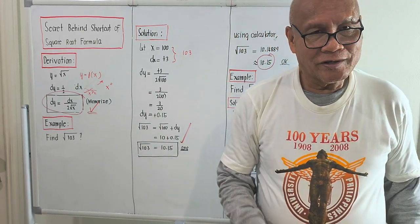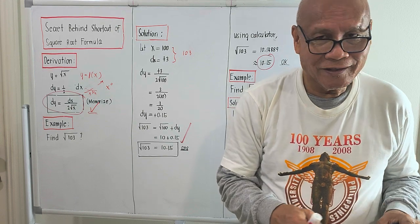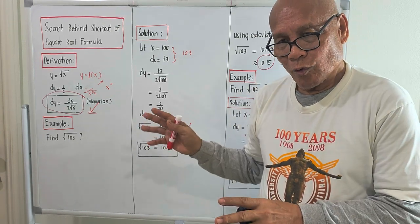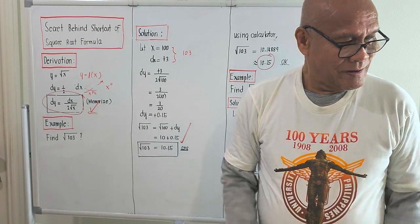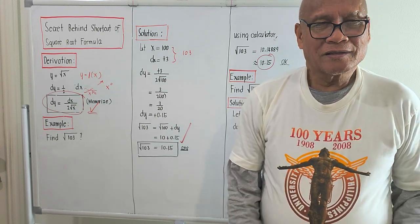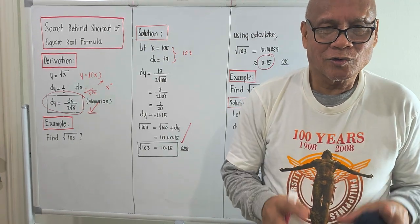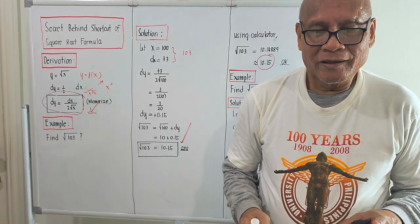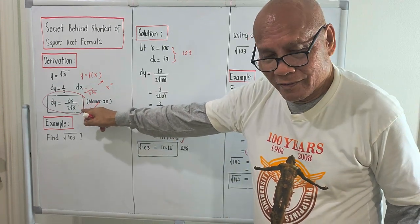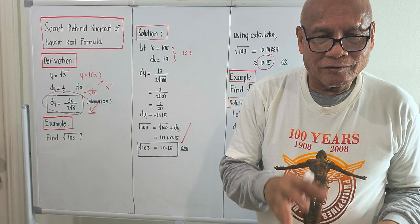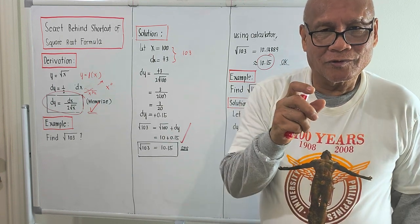Good morning from Los Angeles. This is Professor David J. de los Reyes. For those of you who would like to watch my channel, this is one of my random topics in long video format — the shortcut on how to bring out the square root of any number. The formula to use is dy equals dx over 2 times the square root of x, and the increment in the square root can be either a plus or a minus.